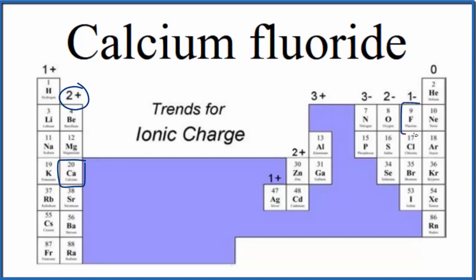Fluoride is in group 17, sometimes called 7A. Elements here will have a 1 minus ionic charge. So we know the ionic charge on the calcium and the fluoride.